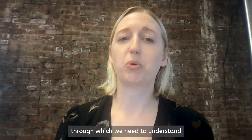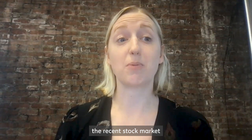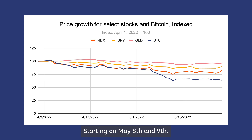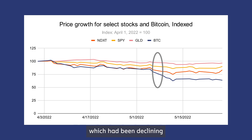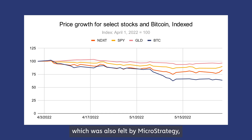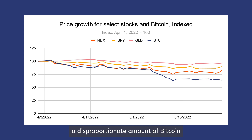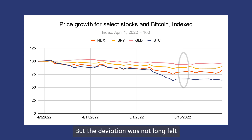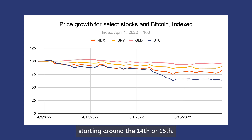This provides the framework through which we need to understand the recent stock market and Bitcoin sell-off, which preceded the UST catastrophe. Starting on May 8th and 9th, we can see that the Bitcoin price, which had been declining at the same rate as other major tech stocks, started to accelerate more — which was also felt by MicroStrategy, a stock of a company that famously holds a disproportionate amount of Bitcoin on its balance sheet. But the deviation was not long felt, and things quickly returned to normal relationships starting around the 14th or 15th.